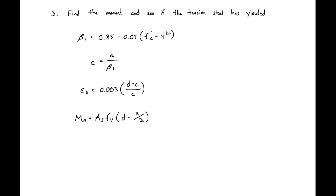We can next find the moment and see if the steel has indeed yielded. We'll do that by first finding our beta 1. We have 4 KSI concrete, so our beta 1 here is just going to be equal to 0.85. We can then find our C. So our C is A over beta 1, so 2.59 inches divided by 0.85, which will give us a C of 3.0 inches.